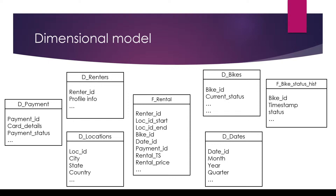The model I think would fit for this has the rental as the fact table at the center. The surrounding dimensions include: the renter (where the renter ID links to the renter dimension), location start and location end (both linking to the locations dimension), and a payment dimension linked by payment ID. We also have a dimension for bikes and a dimension for dates. The bike dimension would include bike brand, current status, make, model number, and acquisition date — which would be useful to calculate the age of the bike and know when to replace it.